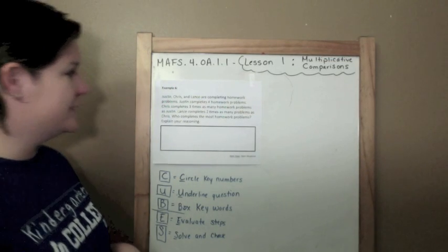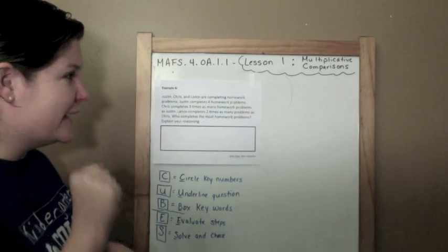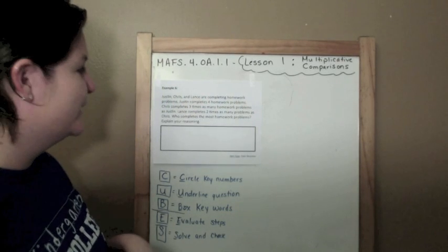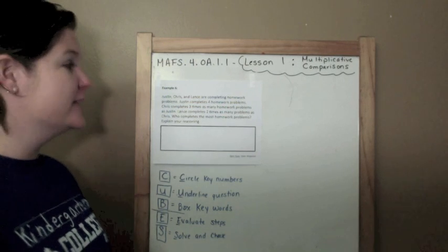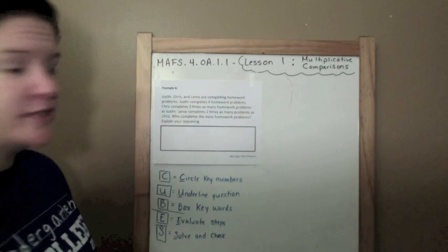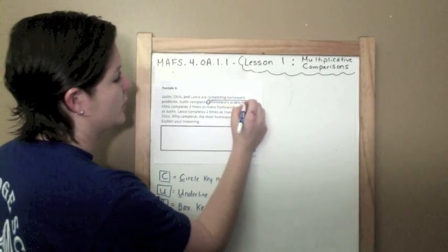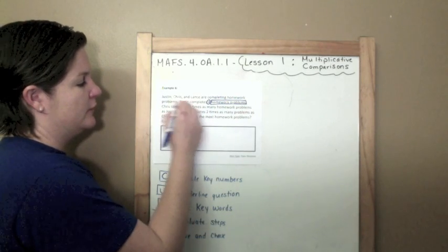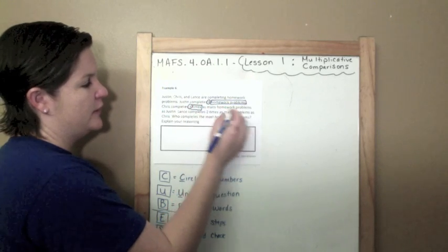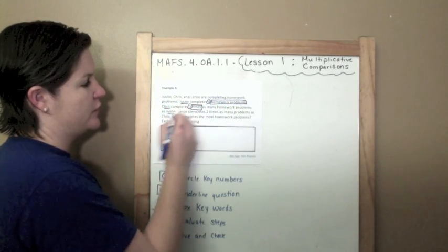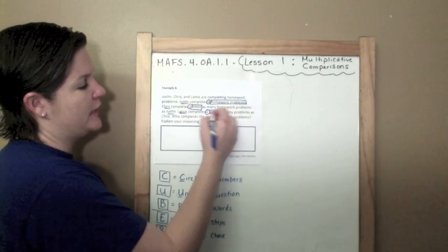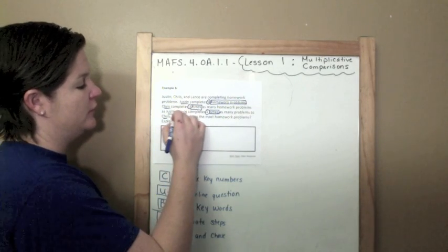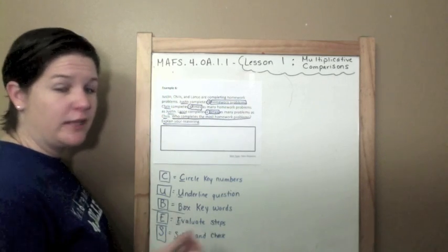Justin, Chris, and Lance. Bye, bye, bye. Inside joke for some of you. Not even a joke, but inside. You know. NSYNC is the bomb. Justin, Chris, and Lance are completing homework problems. Justin completes four homework problems. Chris completes three times as many homework problems as Justin. I'm just going to start underlining names. Lance completes two times as many problems as Chris. Who completes the most homework problems? Explain your reasoning.